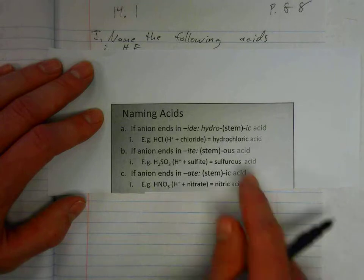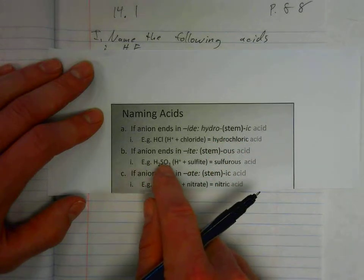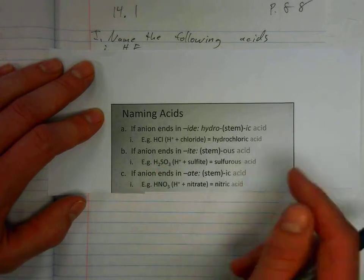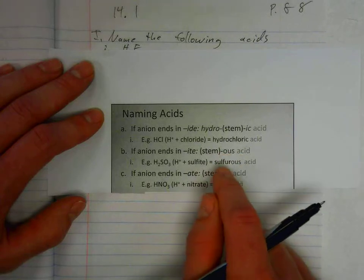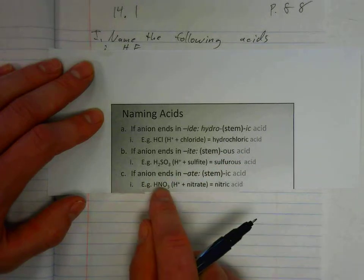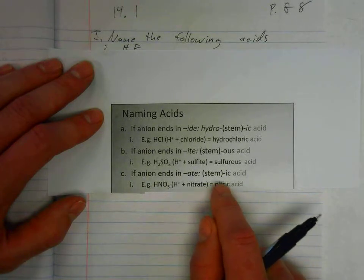If we had this anion, SO3 2-, we follow the rule stem followed by OUS, so sulfurous acid. And if it ends in ATE, for example nitrate, it's the stem followed by IC, nitric acid. Let's do a few examples.